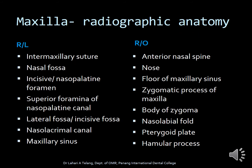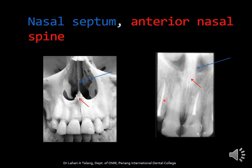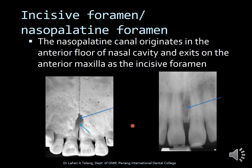Moving on to radiographic anatomy in the maxilla — we have various radiolucent and radiopaque landmarks. The nasal septum and the anterior nasal spine are seen as a triangular or diamond-shaped area, with the thin bone being the nasal septum. The incisive foramen, also called the nasopalatine foramen, is where the nasopalatine canal originates in the anterior floor of the maxillary cavity and exits on the anterior maxilla. It is visible both on the bone model and on the radiograph as a radiolucent area.